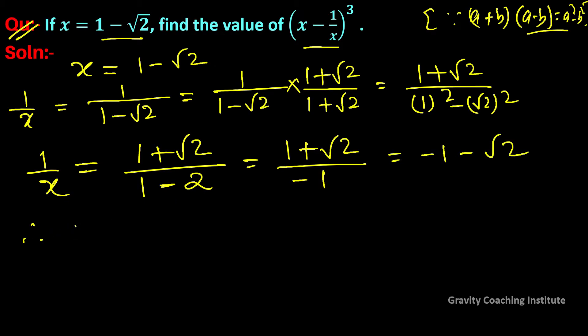x minus 1 upon x is equal to, the value of x is 1 minus root 2, and the value of 1 upon x is equal to minus 1 minus root 2. Equal to 1 minus root 2, and when we open its bracket, its sign will be changed.